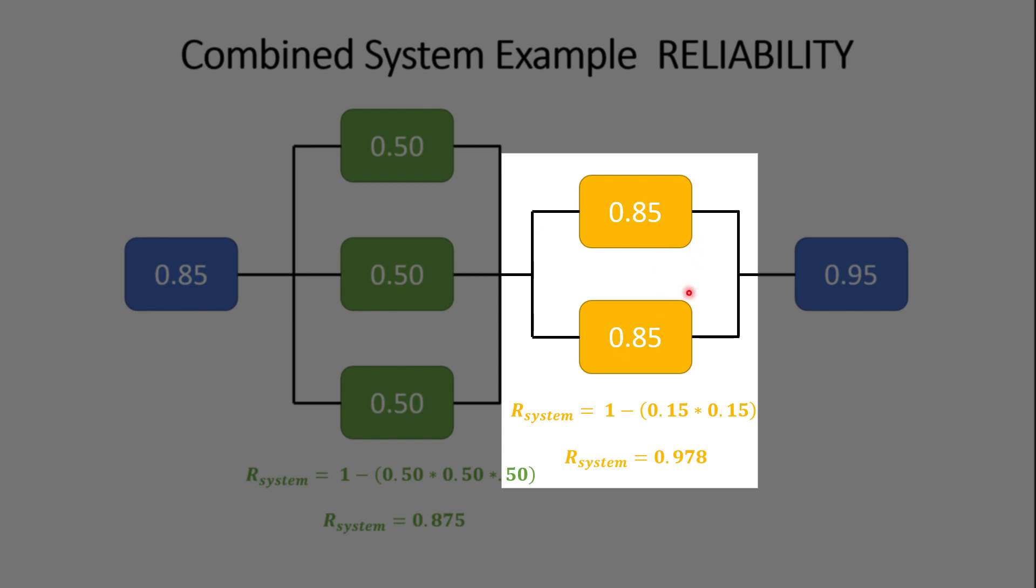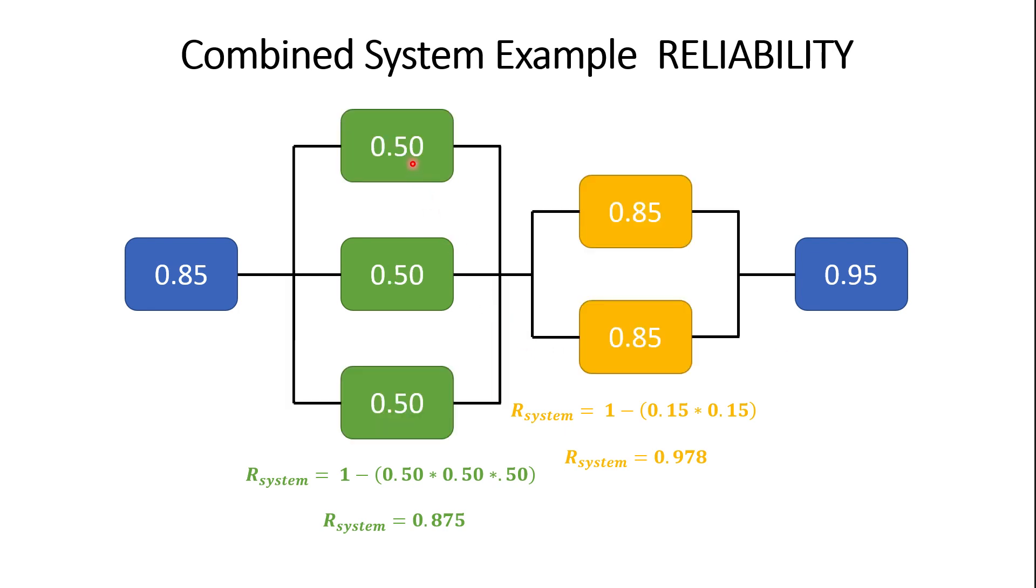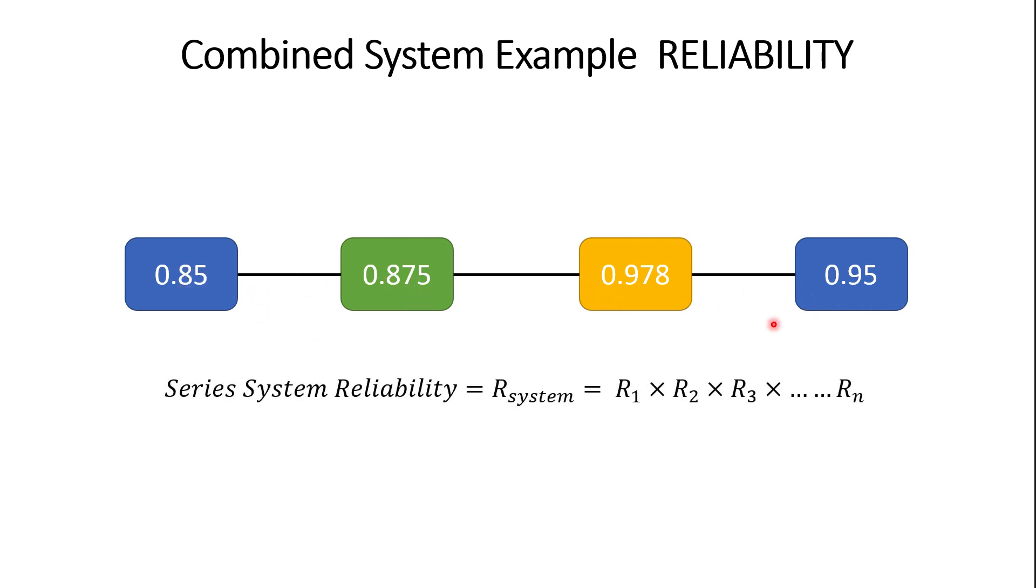Then we can calculate the overall reliability of these two items combined together, which is simply just remember one minus unreliability, which is simply one minus 0.85, which is 15%. So we've got 15% times 15% equals 0.978. And this whole system can be reduced, like graphically, this is what it would look like. We combined these three unique components into a single system that has a reliability of 0.875. Same thing over here. Those two items that were in parallel now simply can be reduced down to a single system that has an overall reliability of 97.8%. And now that we have these four systems in series, we can simply use the series system reliability to calculate the overall reliability of the entire system. And that's simply just 85% times 87.5 times 97.7 times 95% gives us an overall system reliability of 0.69 or 69%.